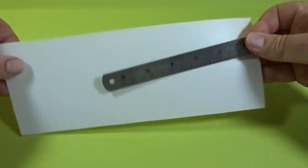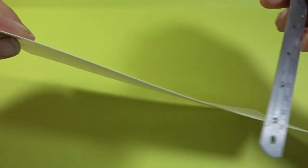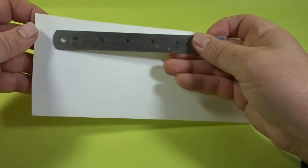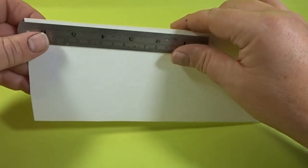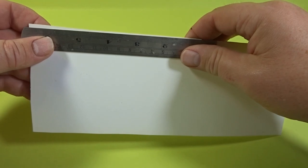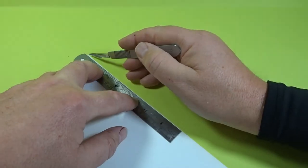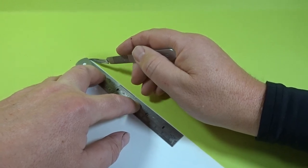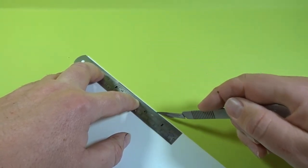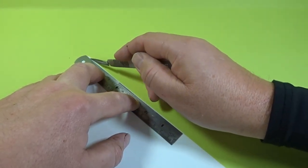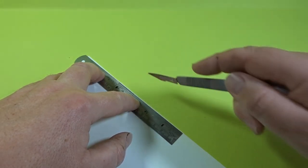First of all you need to get yourself a sheet of 0.25mm plastic card and we are going to square off each of the sides to make sure that the fence panels are in the correct shape. Now it's a matter of just using a metal ruler and a craft knife and then just gently keep dragging the knife down.